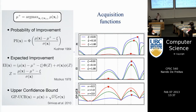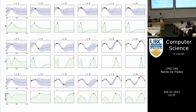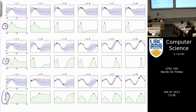In summary, there are several acquisition functions: probability of improvement, expected improvement, upper confidence bounds, and Thompson sampling. They all do similar things. When implementing Bayesian optimization, I recommend trying more than one, as some are more greedy than others. This figure shows three runs on the same function using UCB, probability of improvement, and expected improvement.